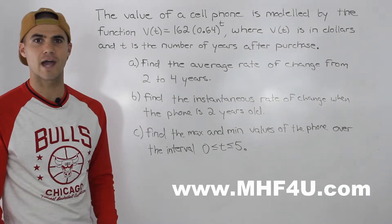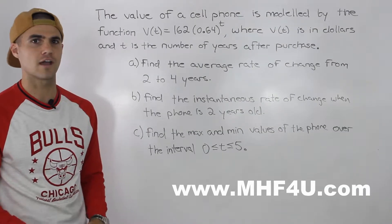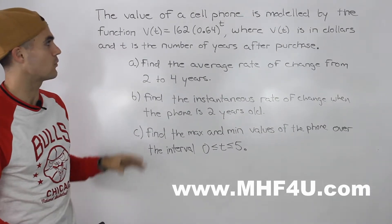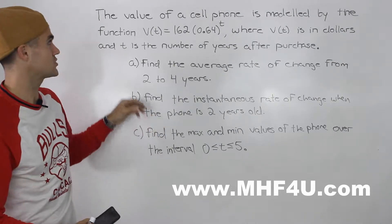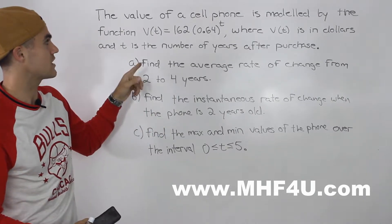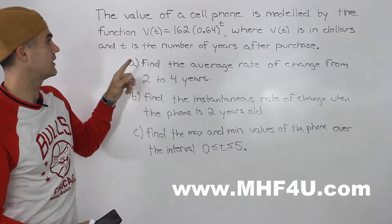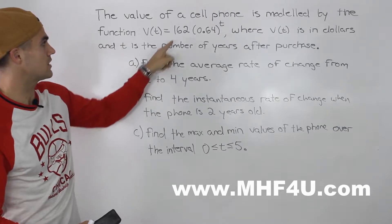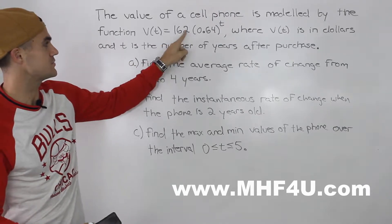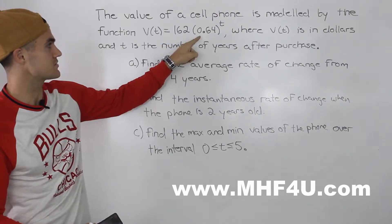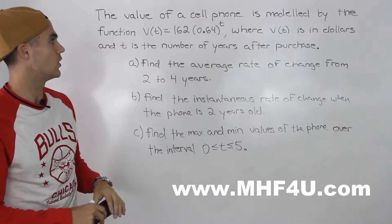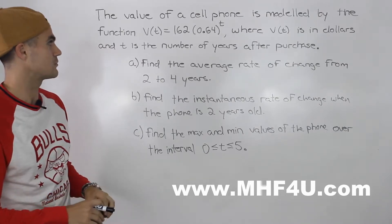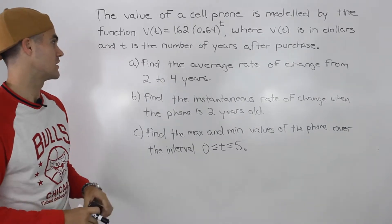Welcome back. Patrick here, and we're going to move on to a word problem dealing with rate of change. The value of a cell phone is modeled by the function V(T) = 162 times 0.64 to the power of T, where V(T) is in dollars and T is the number of years after purchase.